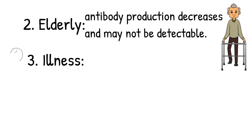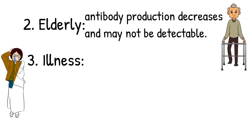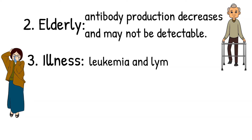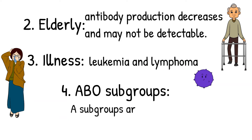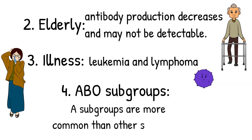Third, illness — some illnesses can cause decreased production of antibody, such as leukemia or lymphoma. Fourth, ABO subgroup — we have an entire video dedicated to ABO subgroups, so you can go watch that at the end of this video.